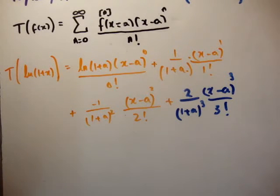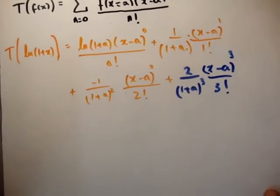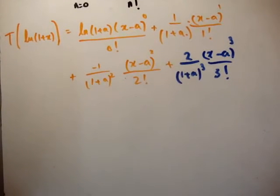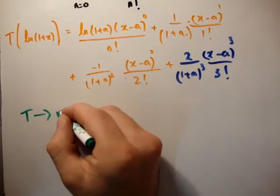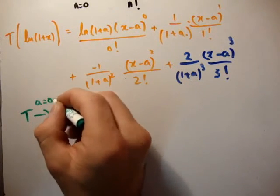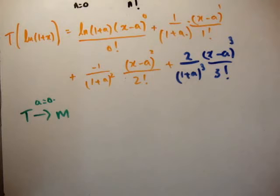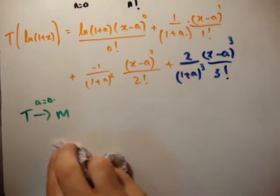So how do we go from a Taylor to a McLaren expansion? Taylor to McLaren expansion, or T going to M, we set a is equal to 0. So we center our function at a is equal to 0.